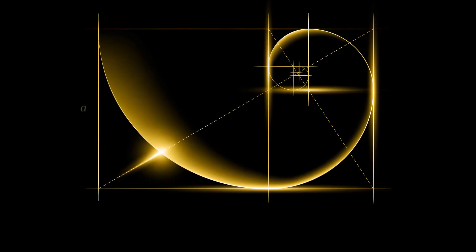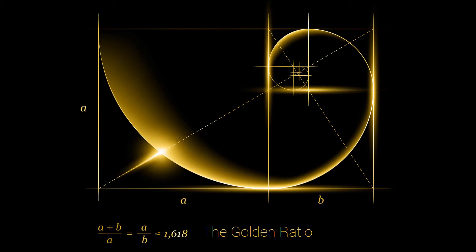Interestingly, Fibonacci found that numbers related to the next and previous by multiples of 1.618 and 0.618. This ratio is known as the Fibonacci ratio, or by its other names: the golden ratio, the golden mean, and phi.